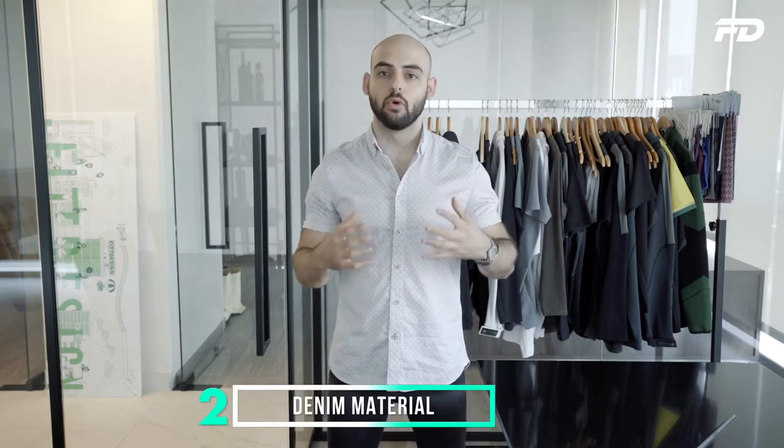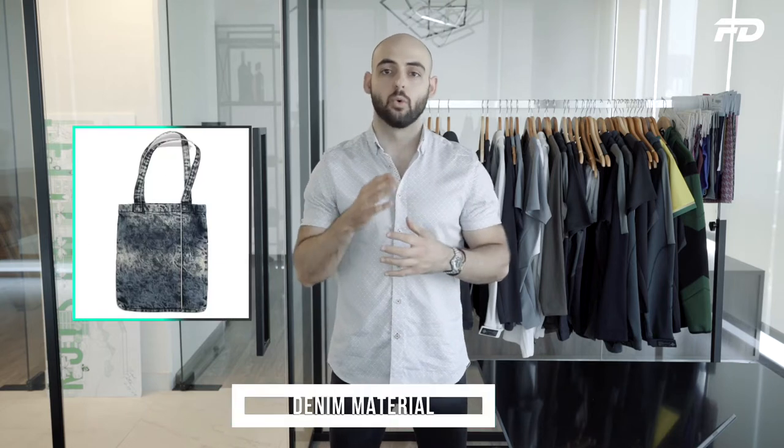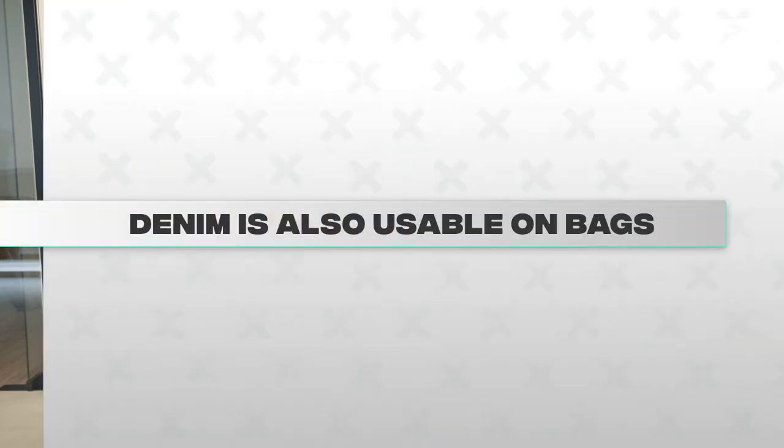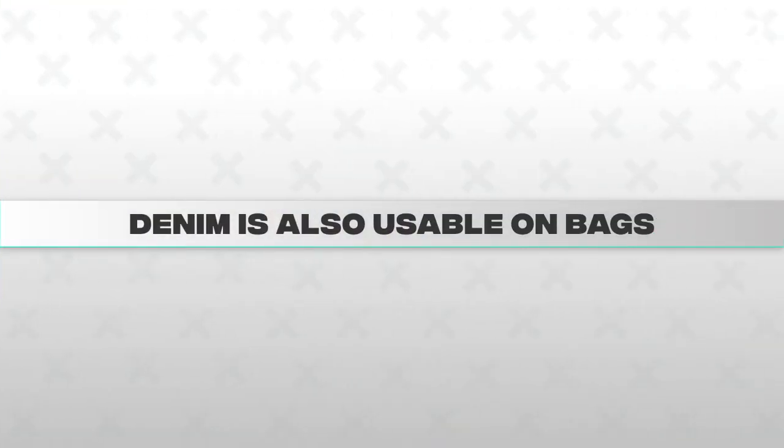Next up we have denim, which is a woven type of material. We'll do a separate video in the future on different types of weaves like satin, sateen, twill, and denim, but just know that denim is also usable on bags. It gives this cold wash effect that's extremely popular on pants and jackets, but it can also be used on more casual type bags, so it's not uncommon to see in this space.